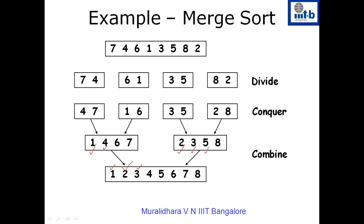Now the left pointer is at four and the right pointer is at three. We compare four and three — since three is smaller, we write that and move the corresponding pointer to the right. Next, we compare four and five — four is smaller, so we move the pointer to six. Next, we compare five and six — five is smaller, so we write five and move the pointer to the right. Now we compare six and eight — since six is smaller, we write six and move to seven.